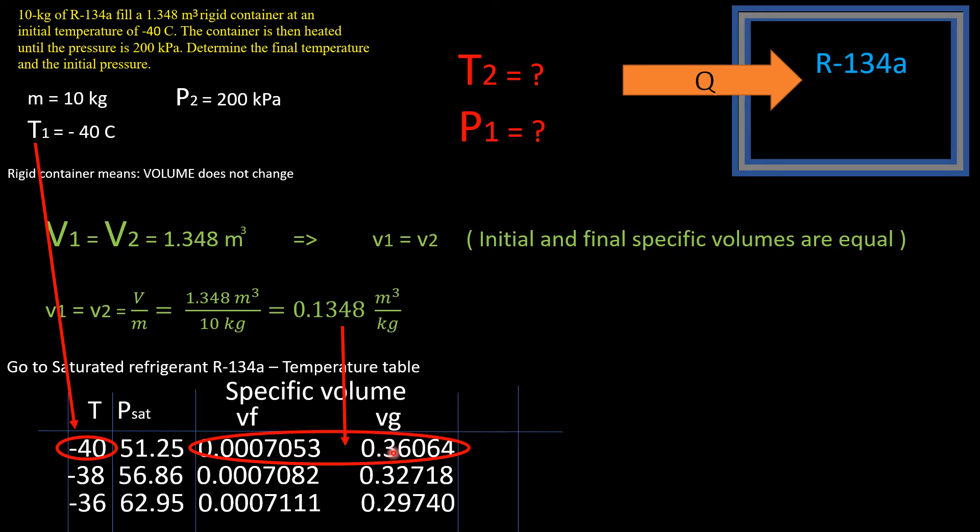This helps us out a lot because since it is a mixture, our initial pressure will be equal to the saturation pressure given in the table. All we have to do is copy it: P1 equals 51.25 kilopascals. This is one of the values that they asked us to find.